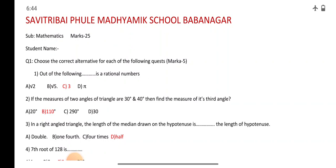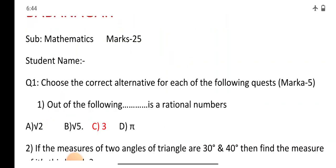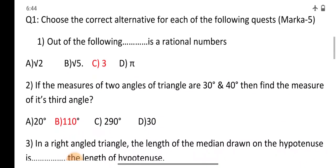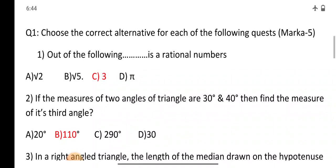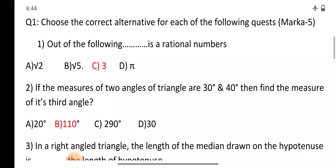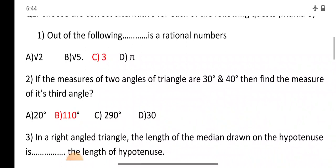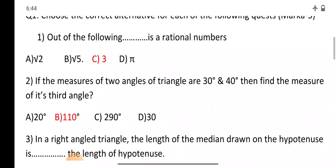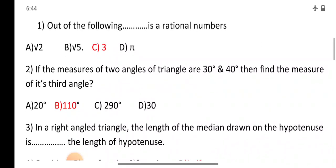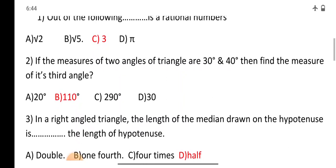Q1: Choose the correct alternative for each of the following questions. First: which of the following is a rational number? Options are A: root 2, B: root 5, C: 3, and D: 5. The correct option is C. Red color indicates the correct answer.